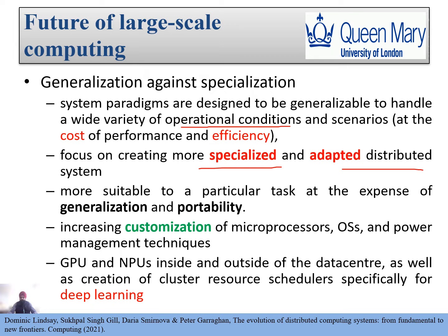Increasing customization of microprocessors, operating systems, and power management techniques can help achieve sustainable cloud computing to some extent. We also need to think about microprocessor chips, operating systems, and GPUs. Neural processing units (NPUs) inside and outside data centers, especially for deep learning, could solve many problems and help make future large-scale systems more efficient and performant.